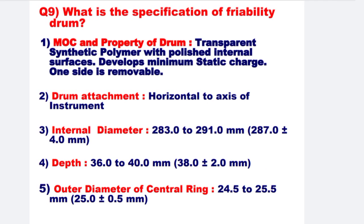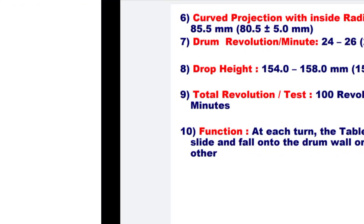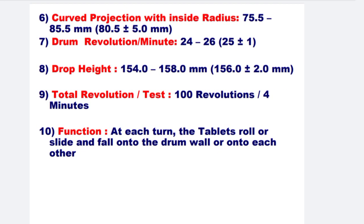Next: What is the specification of the friability drum? Number 1: MOC and property of drum — transparent synthetic polymers with polished internal surfaces, develops minimum static charge, one side is removable. Number 2: drum attachment — horizontal to the axis of instrument. Number 3: internal diameter — 283 to 291 mm. Number 4: depth — 36 to 40 mm. Number 5: outer diameter of central ring — 24.5 to 25.5 mm. Number 6: curved position with inside radius — 75.5 to 85.5 mm.